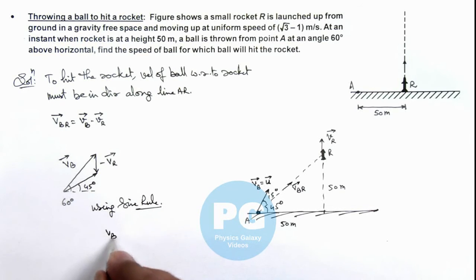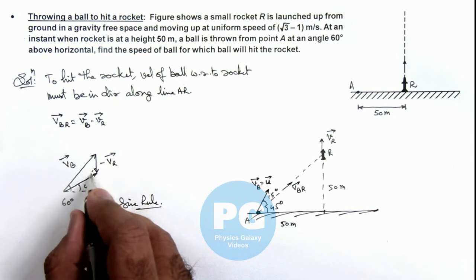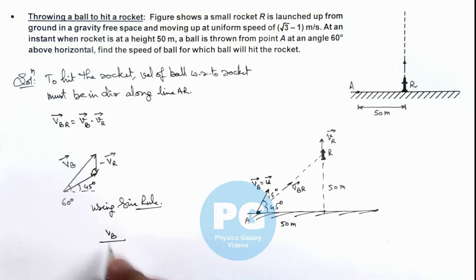Here you can see what we are getting. Here this is v_b divided by, as this angle is 45 this angle is 135 degrees, so we can write v_b upon sin 135 degrees is equal to v_r upon sin 15 degrees.